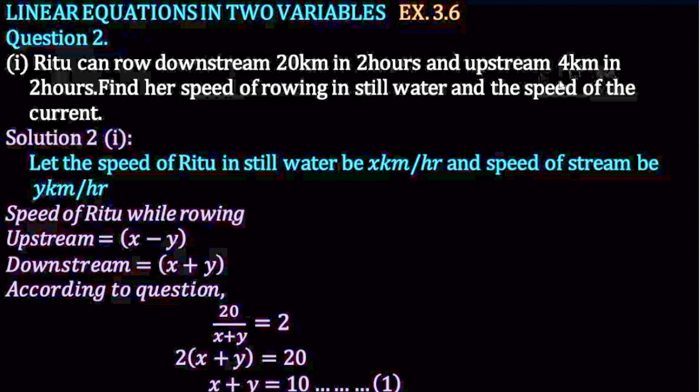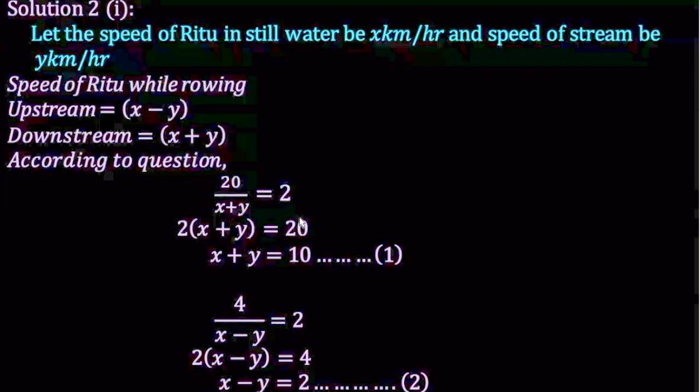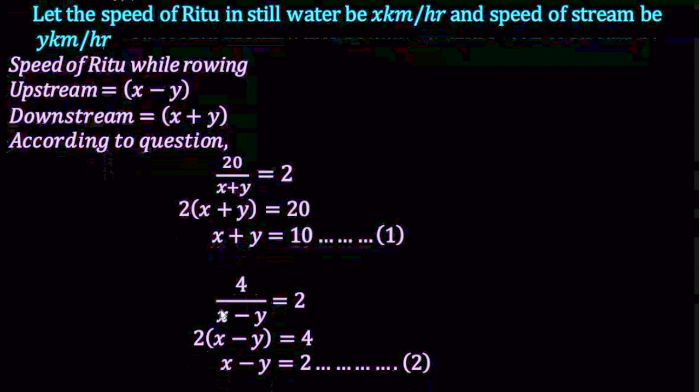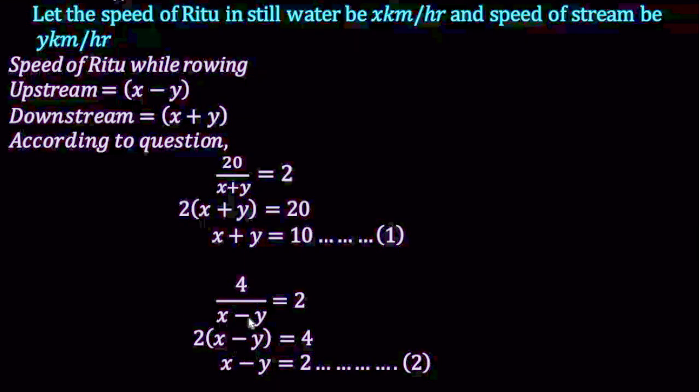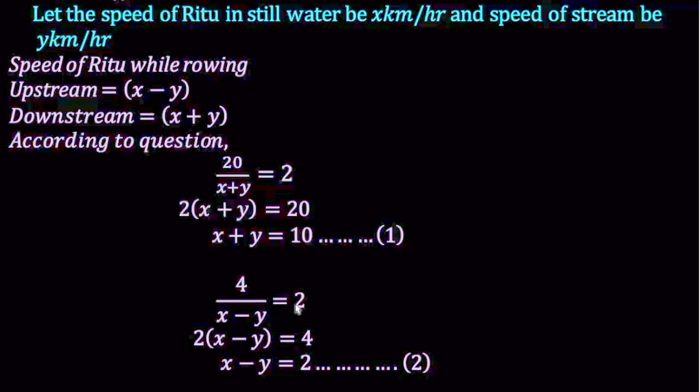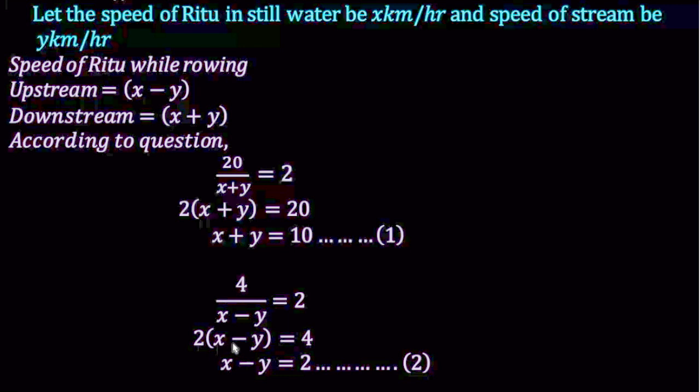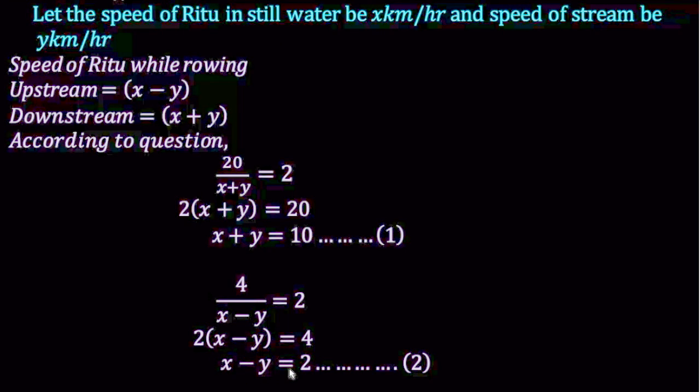Next condition mein 4 km in 2 hours. It means ki 4 km upon jo upstream ke speed hai equal to 2 hours mein jaate hai upstream mein. Isko bhi cross multiply karenge. Toh 2 into x minus y equal to 4, x minus y equal to 2 ajaega.